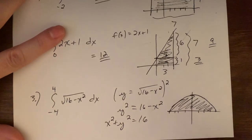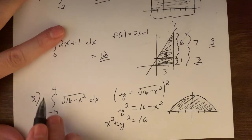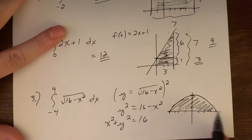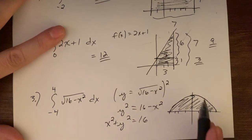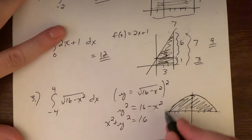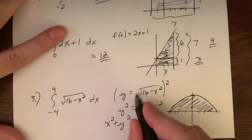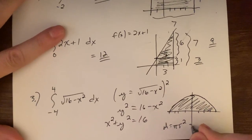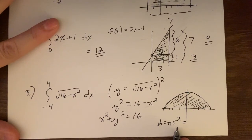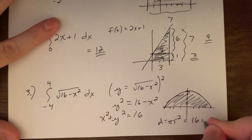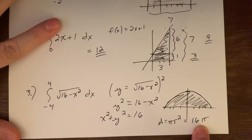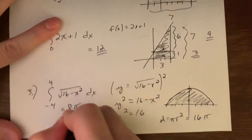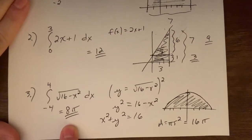From minus 4 to 4, we span 4 units left and 4 units right — exactly the edges of the circle. We're looking at just the top half. The area of the whole circle is pi r squared equals 16 pi. We're only looking at half that circle, so the answer is 8 pi.